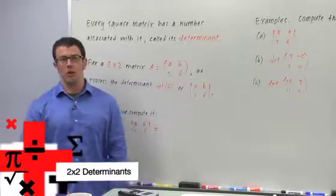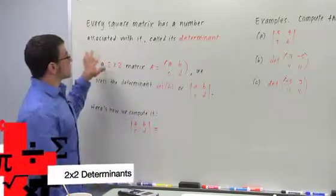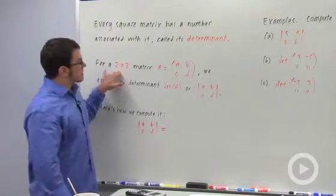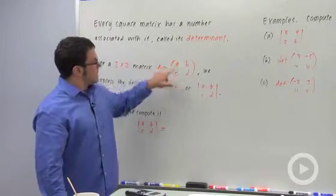I want to talk about the determinant of a square matrix. Every square matrix has a number associated with it which we call the determinant. For a 2 by 2 matrix, let's say the matrix is A, B, C, D.